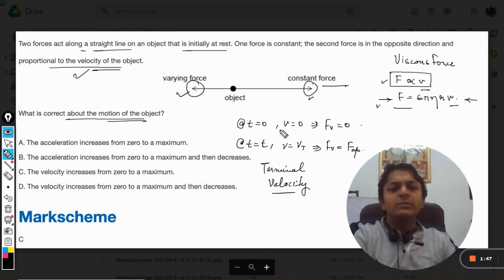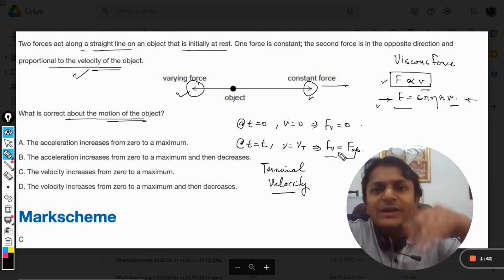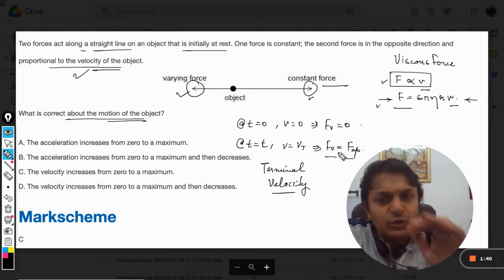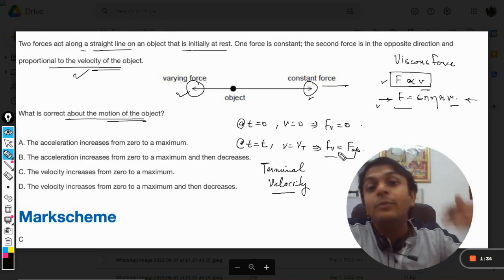Fine. So it means, now when these two forces are equal to each other, what is the net force of the body? Zero. And because the net force is 0, the acceleration will be 0. So the velocity will stop increasing.